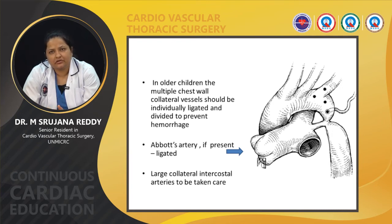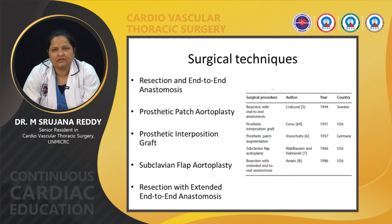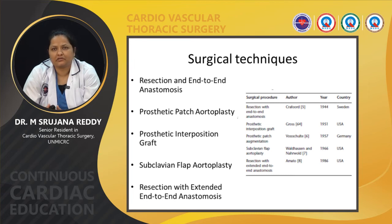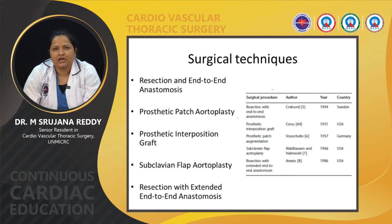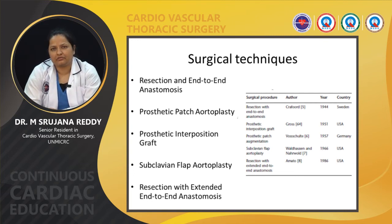An aberrant artery arising from the posterior surface of the coarctation, if noted, has to be ligated, and larger collateral intercostal arteries must be taken care of. The surgical technique milestones include the first resection and end-to-end anastomosis by Crawford and Nylon in 1944, followed by Gross and colleagues using prosthetic patch aortoplasty. Waldhausen and Nalwald performed the subclavian flap aortoplasty in 1966. Amato and Otto et al. described resection and extended end-to-end anastomosis.